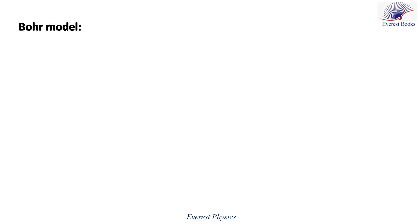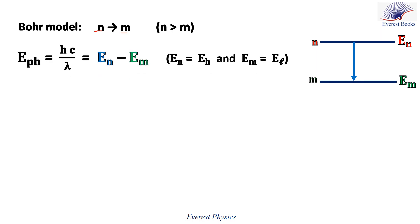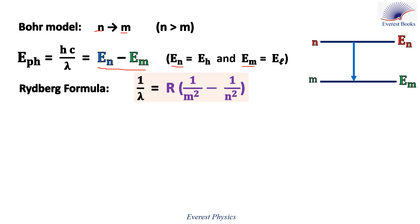According to the Bohr model, when an atom undergoes a downward transition from an energy level of quantum number n to an energy level of quantum number m, the atom emits a photon. The energy of this photon equals the energy difference between these two levels, where En is the higher energy level and Em is the lower energy level. Let me remind you of the Rydberg formula.